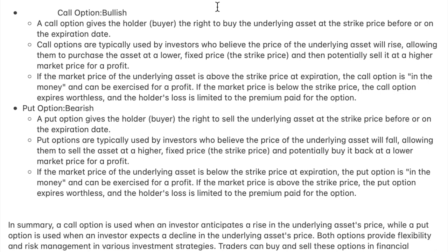The call option gives the holder, the buyer, the option to buy the underlying asset at the strike price before or on the expiration date. So let's say you are buying a contract that has a strike price of $50 — if the stock ends up closing above $50, then you're going to buy that stock. If you have one contract it'll be 100 shares, and you're going to buy it at that price regardless of how high the current price is. So if it's at $53, you'll get it at $50.